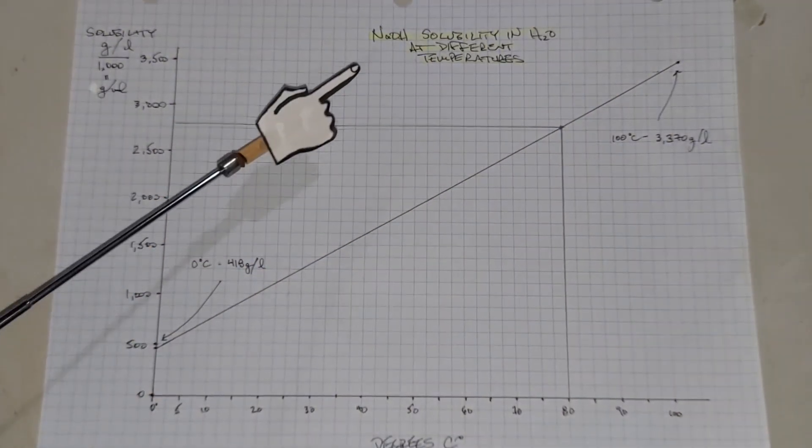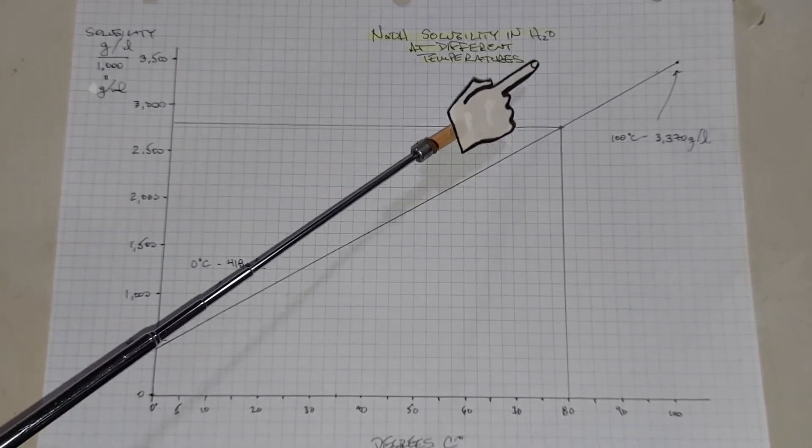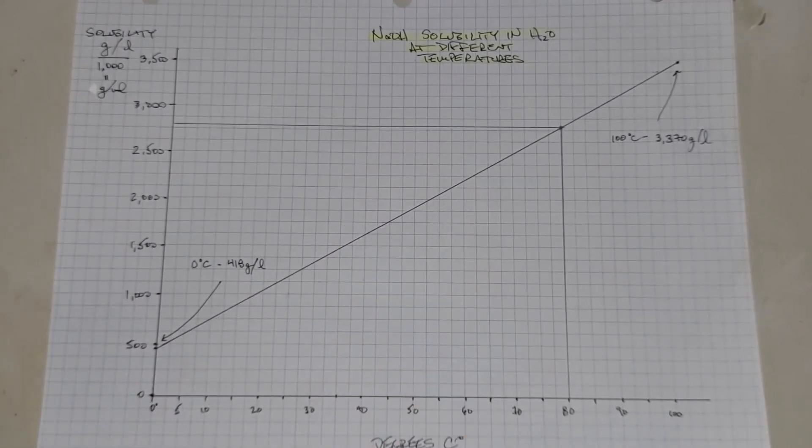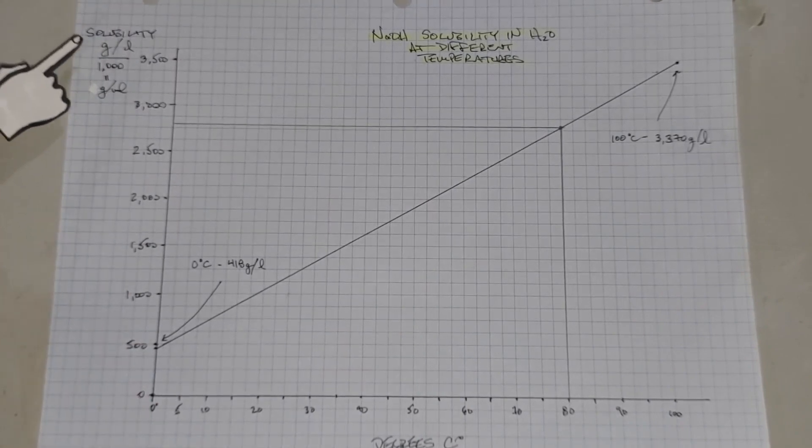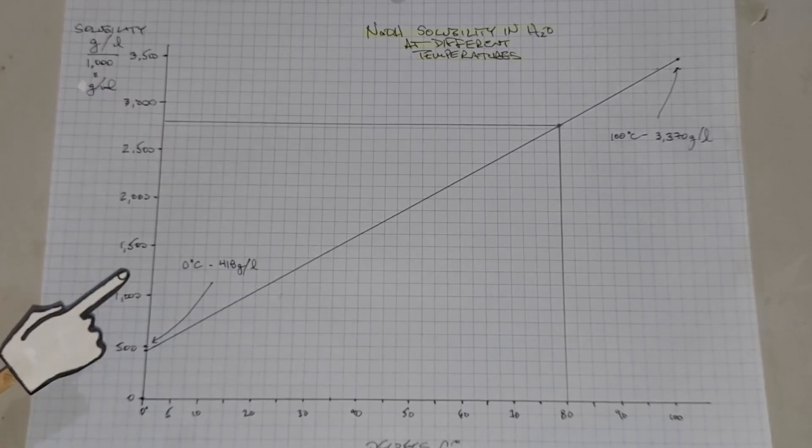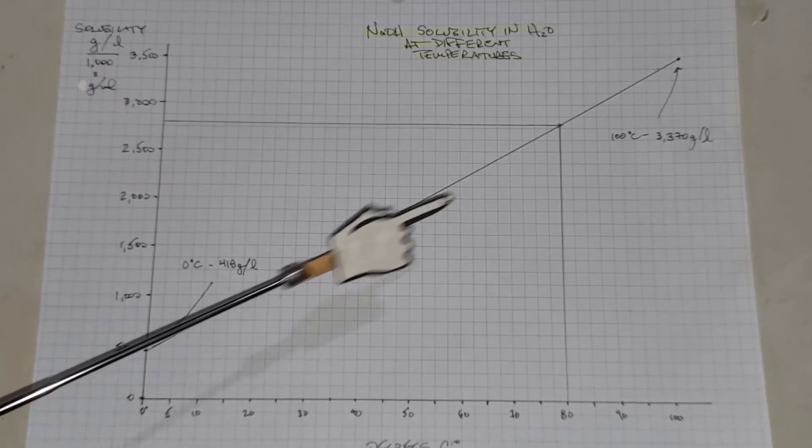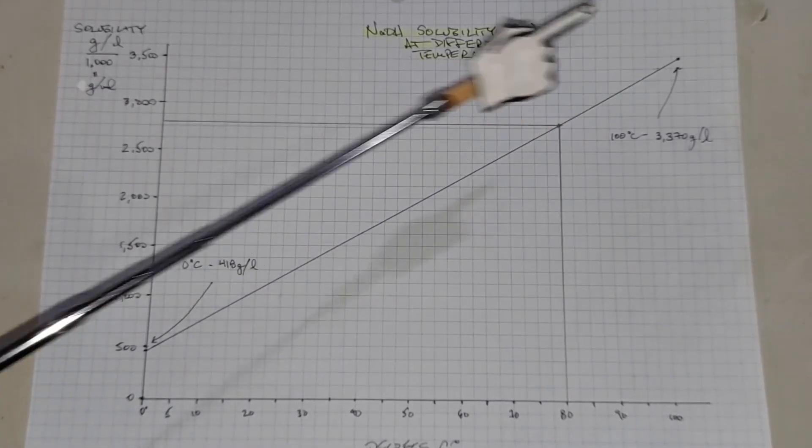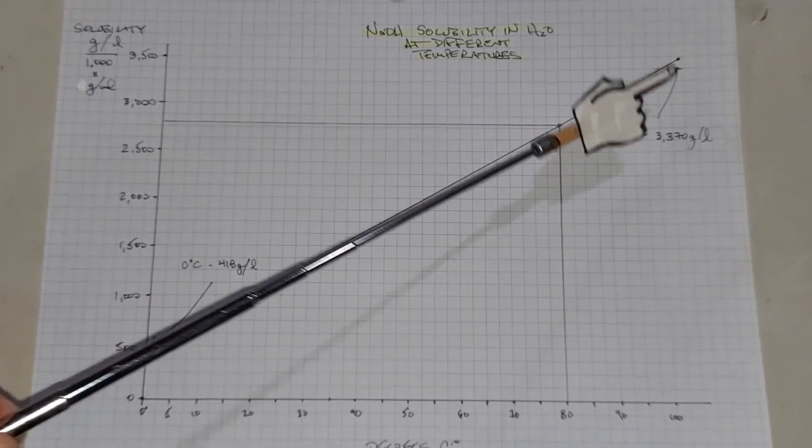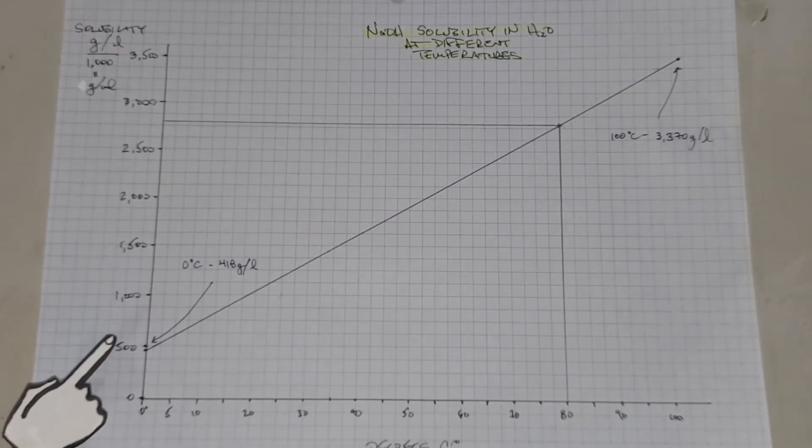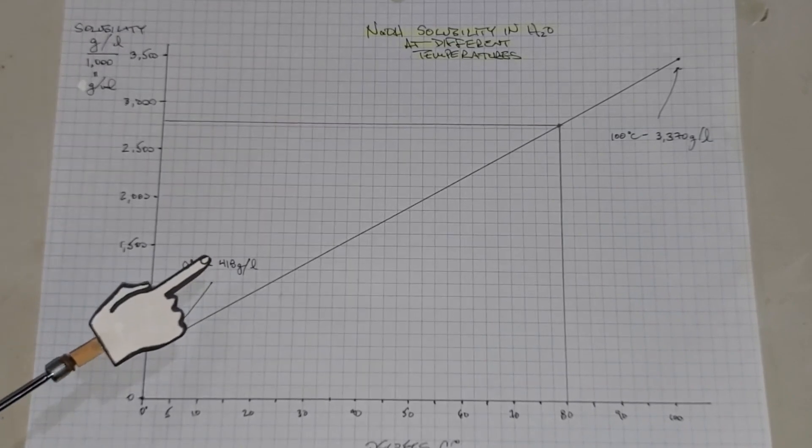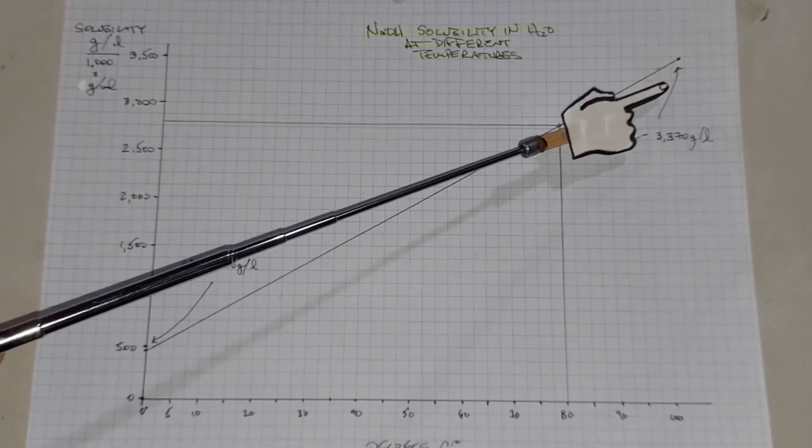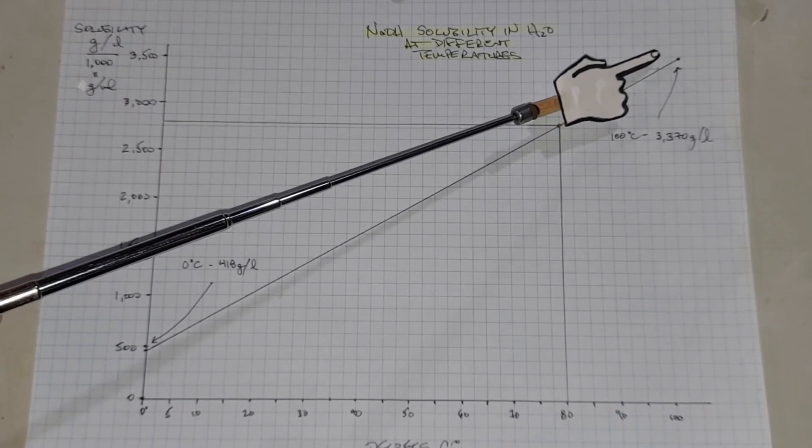This is a graph I made of the sodium hydroxide solubility in water at different temperatures. On the x-axis is the degree Celsius and on the y-axis is the solubility of sodium hydroxide measured in grams per liter. The line that I drew here is not 100 percent accurate. It is accurate between these two points which are known solubilities: this one at zero degrees Celsius is 418 grams per liter, this one is 3370 grams per liter at 100 degrees C.